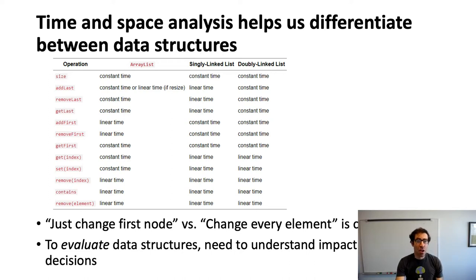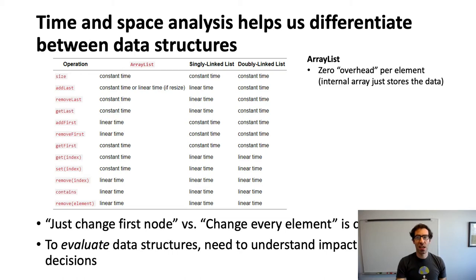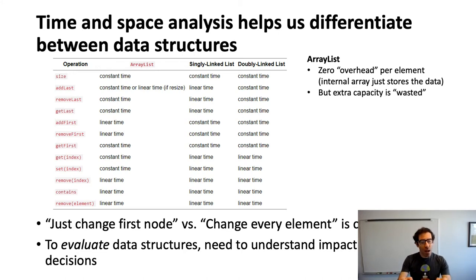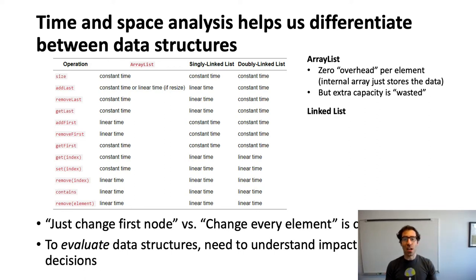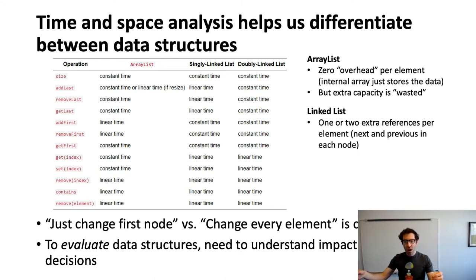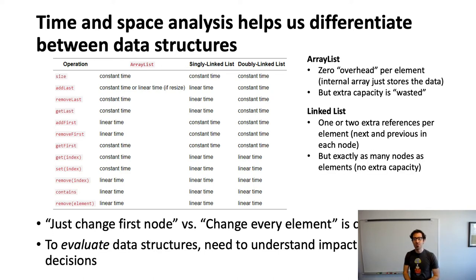We can also think about the space that array lists and singly linked lists take. Array lists have zero overhead per element — we have the internal array and it stores just the data, with no extra information per element — but we may have extra capacity in the internal array that is wasted. In contrast, a linked list has one or two extra references per element: a next pointer and possibly a previous pointer for a doubly linked list. But we only have exactly as many nodes as elements we have — no wasted capacity.